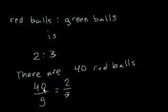And then we could just solve this. We just cross-multiply. 40 times 3 is 120, is equal to 2g. And then we just solve. We just say g equals 60.